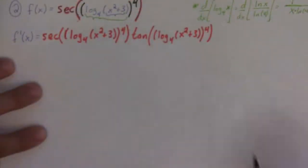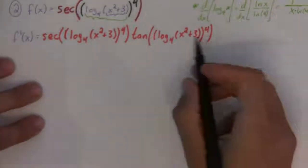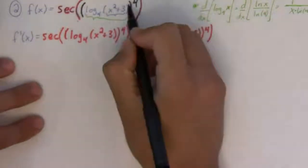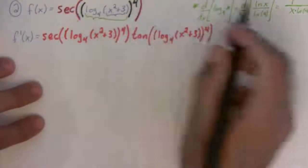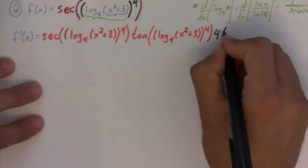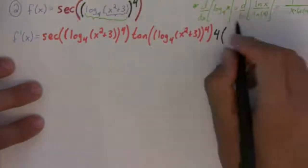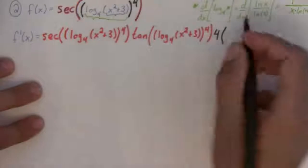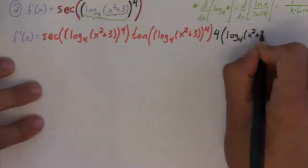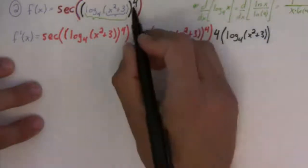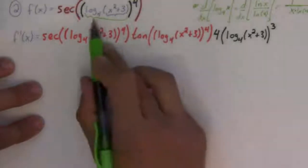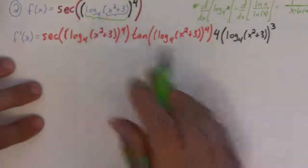Okay. I'm going to need a lot of room here. I don't know if I'm going to run out. But, we'll see. We'll keep going. So, the derivative of the inside, which is this black one, is we use the power rule. So, we have 4. And, we're going to leave the inside alone here in green. So, log base 4 of x squared plus 3. Subtract 1. We get 3.